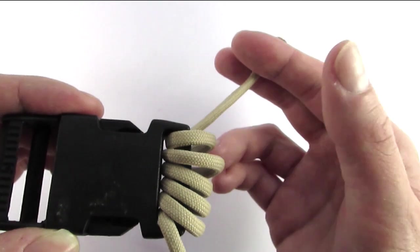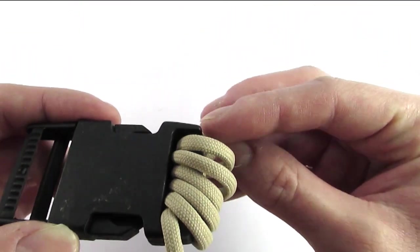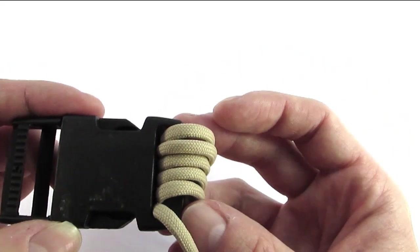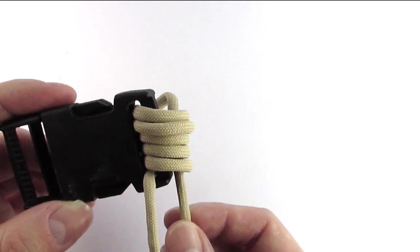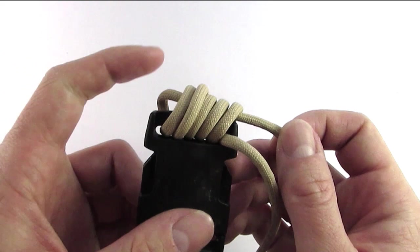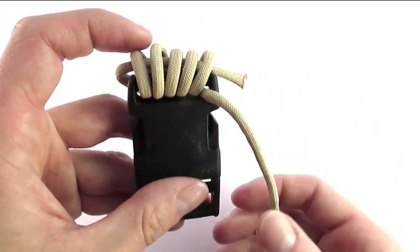I'm going to tuck this end through the loops, and by doing this I've effectively finished one end. You can place a half hitch here to prevent the end from entering the loops again, or just melt it down.